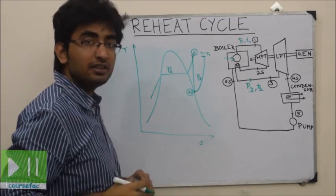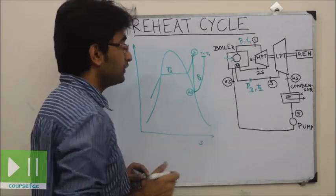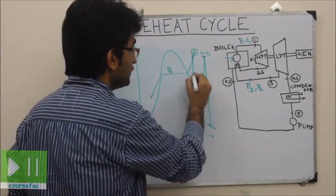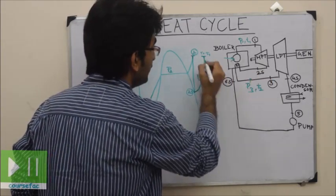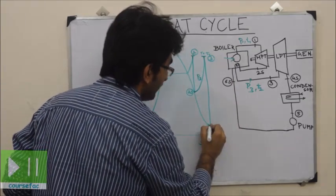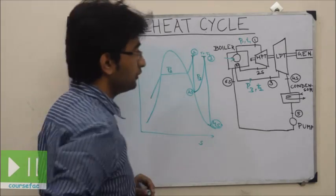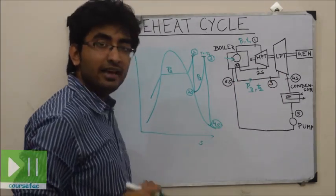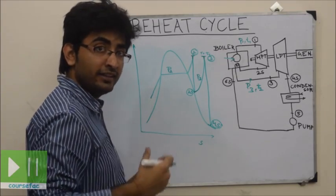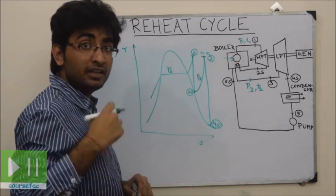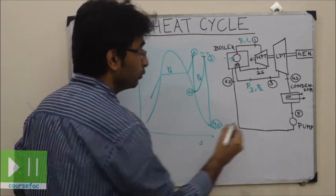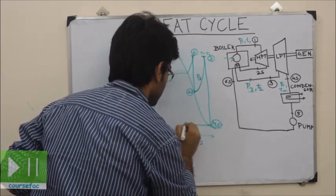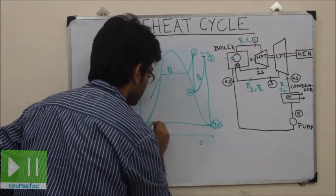After the constant pressure heat addition, there is expansion inside the low pressure turbine. Point 3 is the inlet to the low pressure turbine and 4S is the exhaust from the low pressure turbine. At 4S, the steam enters the condenser where there is a change of phase — steam gets converted into liquid (water) at constant pressure P2. This phase change in the condenser occurs from point 4S to point 5.